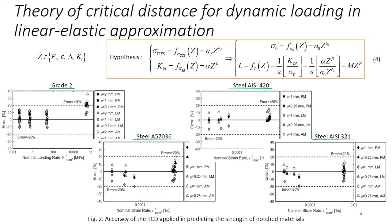If we are talking about the dynamic loading case, then mechanical properties of metallic materials subjected to dynamic loading are different from the ones observed under quasi-static loading. In our work, a modification theory of critical distance for the case of dynamic loading, which is based on the power law dependence of the critical distance on the strain rate was proposed.